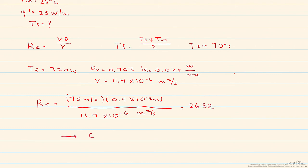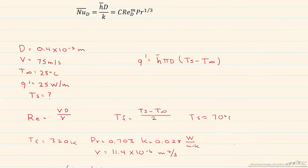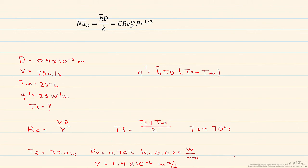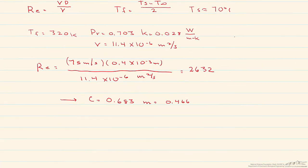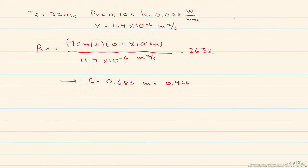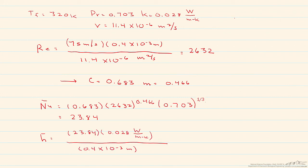which leads us to the constants such that C is going to equal 0.683, and our M is going to equal 0.466. So when we go back, and look at that correlation, when we put those C's and our Reynolds number, as well as our Prandtl number in, let's see what we get for that Nusselt number. So our Nusselt number, and remember that the bar over the Nusselt number means that it's an average Nusselt number, and our H also is an average heat transfer coefficient. So our Nusselt number is equal to 23.84, and from